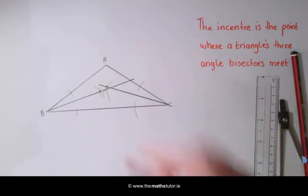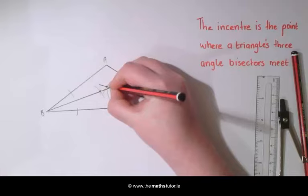Where the two angle bisectors meet is called the in-center of the triangle.